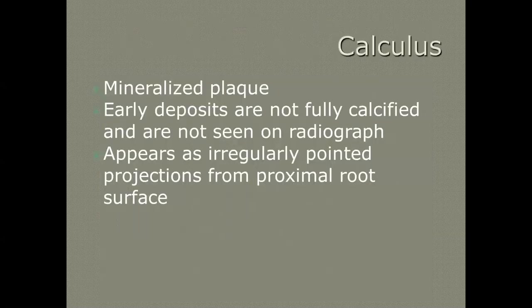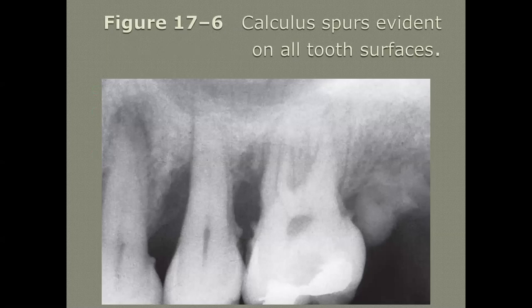Looking for calculus — does it show up on radiographs? Yes, calculus does, but early deposits aren't fully calcified and aren't seen on the radiograph. They can appear as irregular pointed projections or 'wings.' When we're seeing a lot of calculus like this, we know that the patient has more calculus than what's really visible on the radiograph. We're not going to struggle with difficulty rating — if there's bone loss like this throughout the mouth, it's a difficulty four patient.